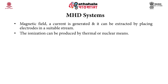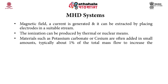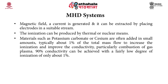The ionization can be produced by thermal or nuclear means. Materials such as potassium carbonate or cesium are often used in small amounts — typically about 1% of the total mass flow — to increase ionization and improve conductivity, particularly of combustion gas plasma. About 90% conductivity can be achieved with a fairly low degree of ionization of only about 1%.